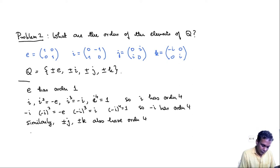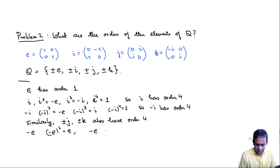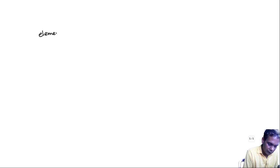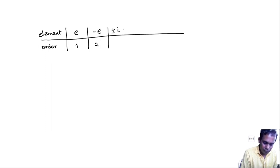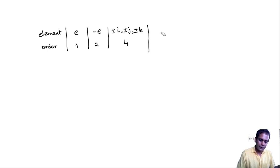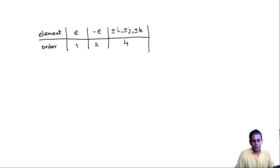That only leaves the element -e. Well, (-e)² = e, so -e has order 2. We can now make a table: e has order 1, -e has order 2, and ±i, ±j, ±k all have order 4. So our group has 6 elements of order 4, 1 element of order 2, and 1 element of order 1.